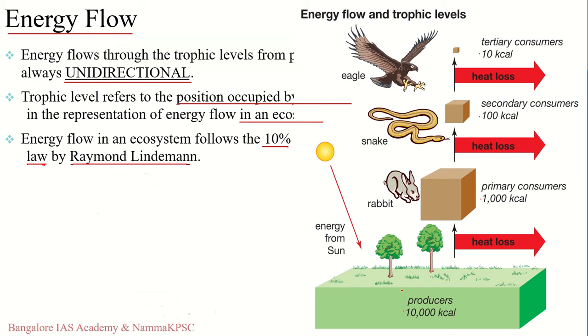Net primary productivity is the amount of energy available in primary producers after cell respiration. Similarly, we have net herbivore productivity and net carnivore productivity at their respective levels.